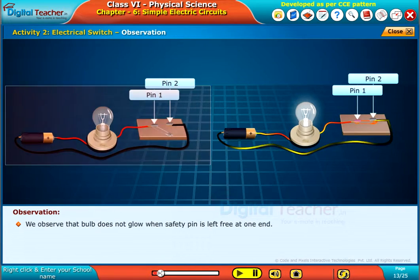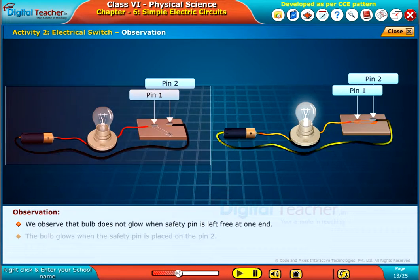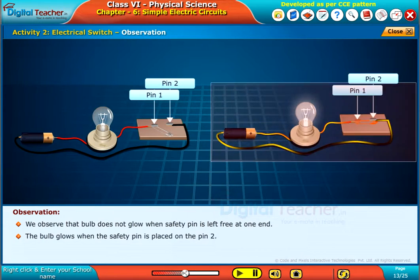We observe that the bulb does not glow when the safety pin is left free at one end. The bulb glows when the safety pin is placed on pin 2.